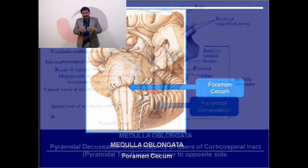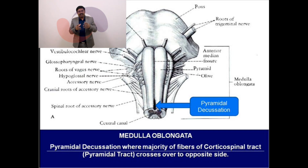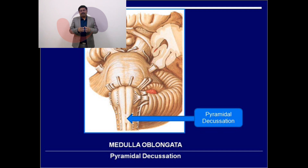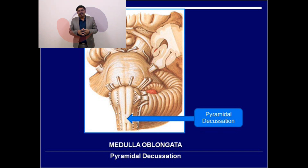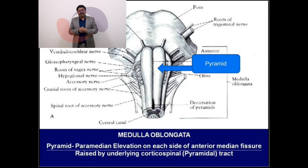In the lower part, the anterior median fissure is disrupted by the crossing fibers of the pyramidal tract, known as pyramidal decussation. This is the crossing of fibers of the pyramidal tract, or corticospinal tract. The majority — about 75–80% — of corticospinal tract fibers cross at the level of the pyramidal decussation, disrupting the anterior median fissure.